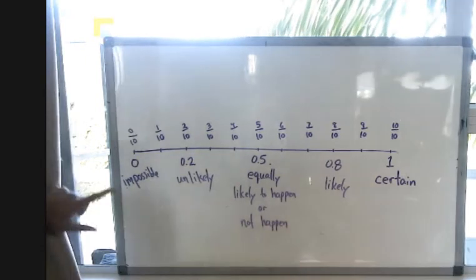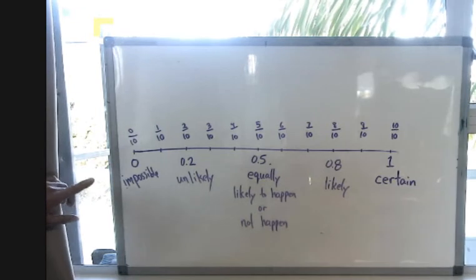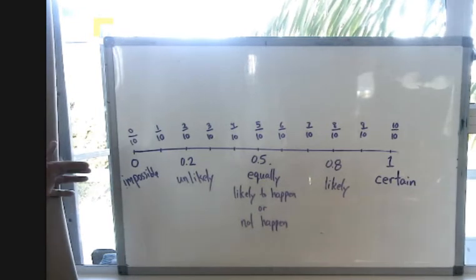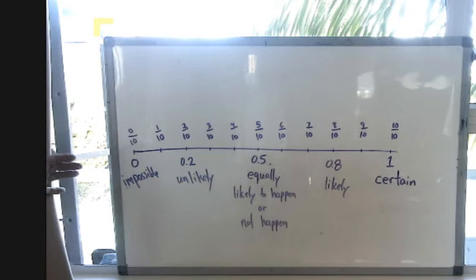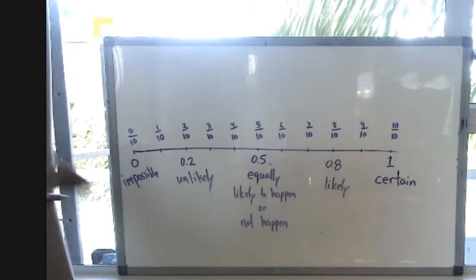The probability of zero means the event is impossible. It cannot happen. For example, the probability that Auckland receives five meters of snow on Christmas Day. It's not going to happen.